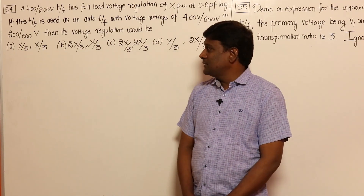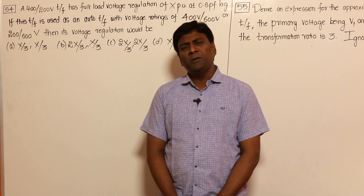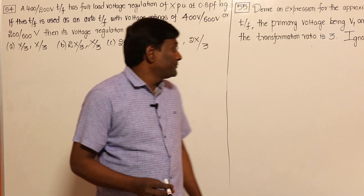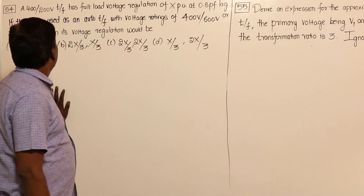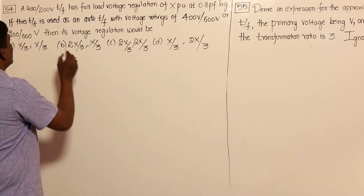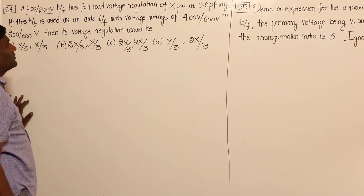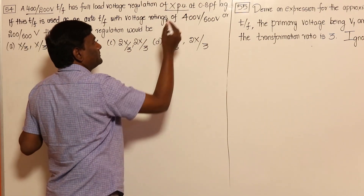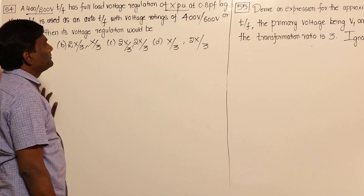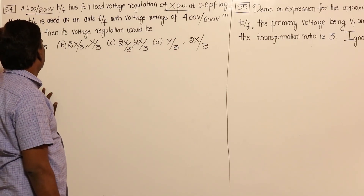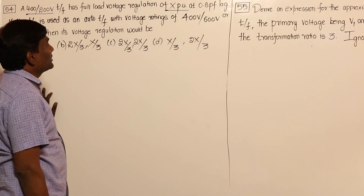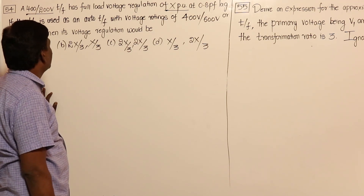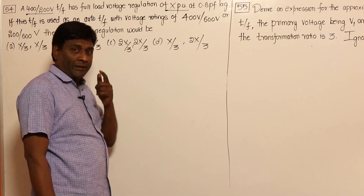In this session, let us see two very beautiful questions on auto transformers. A 400 by 200 volts transformer has a full load voltage regulation of X per unit at 0.8 power factor lagging. If this transformer is used as an auto transformer with voltage ratings of 400 by 600 or 200 by 600, then its voltage regulation would be?